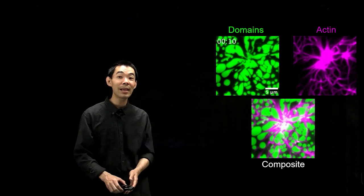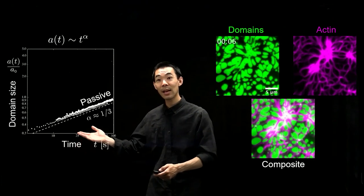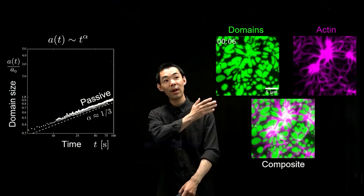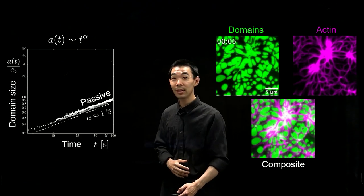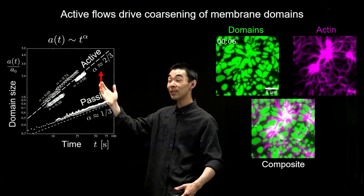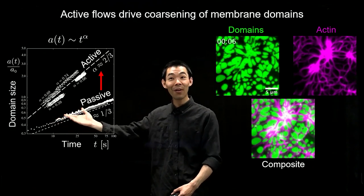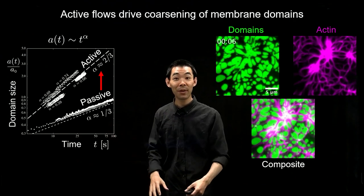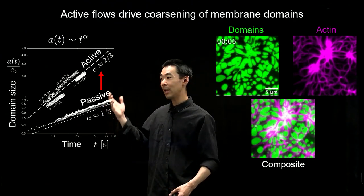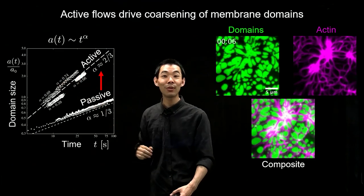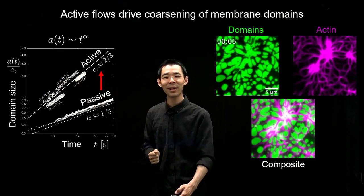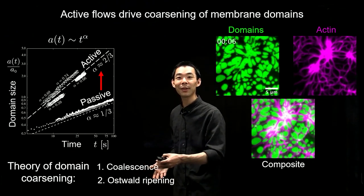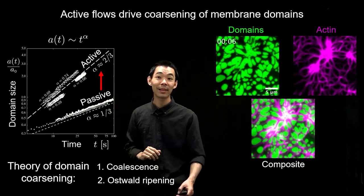We can take the same metric of domain size as a function of time that I measured earlier — where it was t^(1/3). Plotting it for this active system, across different experimental realizations, they all fall along an accelerated coarsening. Domains are growing faster as a function of time when you add active flows, and all the data seem to fall along a t^(2/3) scaling.